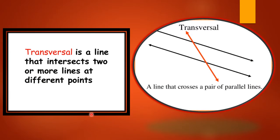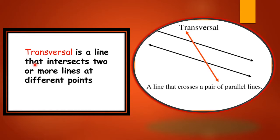This transversal — can you see this? Here we have two parallel lines and one another line that is going to cut these two lines. That third line is known as a transversal — a line that crosses a pair of parallel lines. That means a transversal is a line that intersects two or more lines at different points.